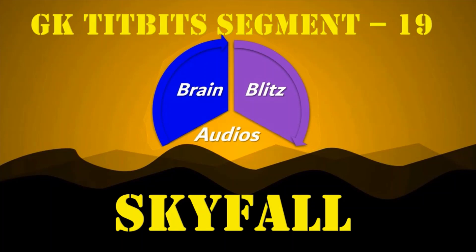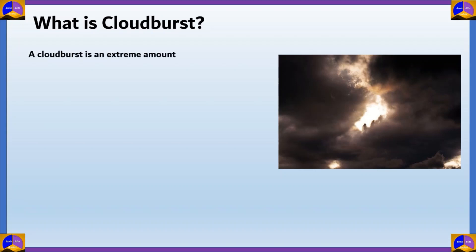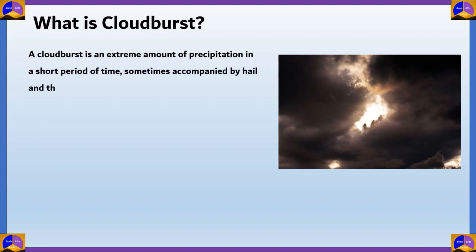A cloudburst is an extreme amount of precipitation in a short period of time, sometimes accompanied by hail and thunder, which is capable of creating flood conditions. Cloudbursts can quickly dump large amounts of water. For example, 25 mm of precipitation corresponds to 25,000 metric tons per square kilometer. Rainfall rate equal to or greater than 100 mm per hour is a cloudburst.